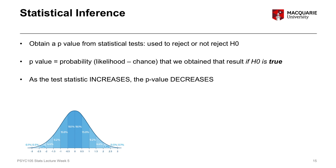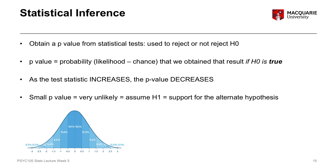The test statistic we get is a certain number — a particular value. The bigger the test statistic, meaning further away from zero, the smaller the p-value that corresponds to that test statistic. And the smaller the p-value, the less likely it is that we obtained this particular result if the null hypothesis is true. Therefore, the more likely it is that the null hypothesis is not true, and the stronger the support for the alternate hypothesis.